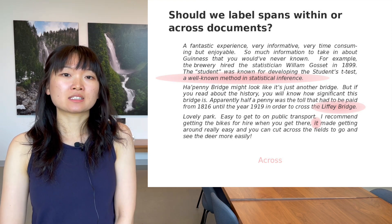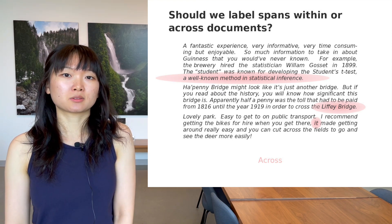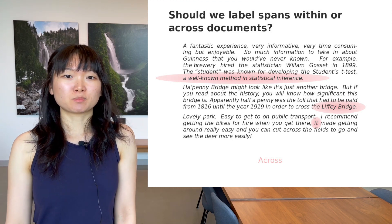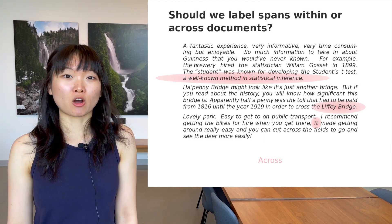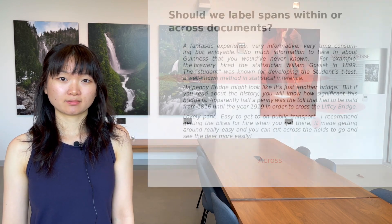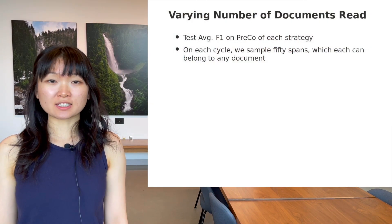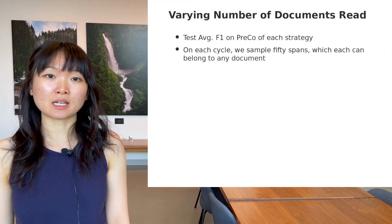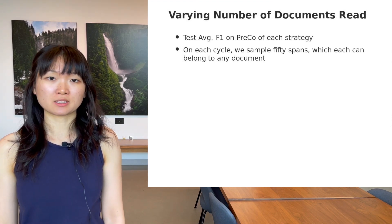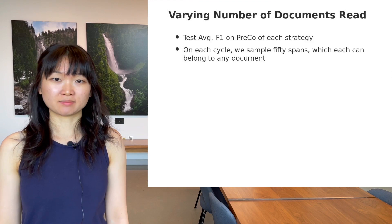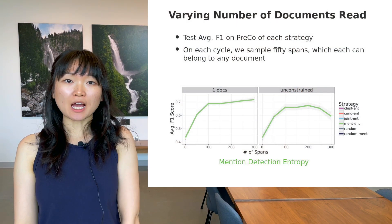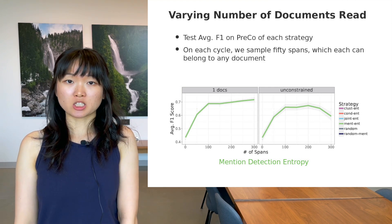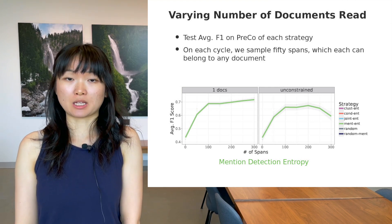The caveat is that labeling three documents requires reading all of them. And with more reading, this might cause a slowdown in coreference labeling. To understand the effects of sampling from one document versus multiple documents, we simulate sampling 50 spans from all documents on each active learning cycle. We show a side-by-side comparison between the previous one-document sampling simulation and the unconstrained sampling simulation.